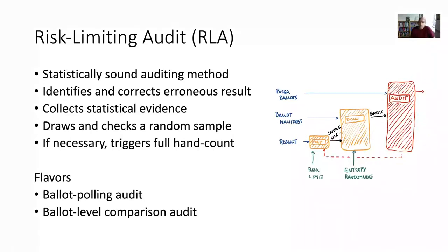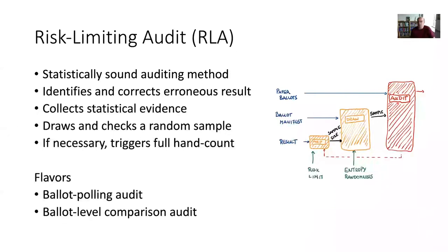Risk-limiting audits come in many different flavors. There's the ballot polling audit, where you draw a sample and try to find statistical support for the correctness of the election result. In a ballot-level comparison audit, you check that each ballot is correctly registered on the cast vote record (CVR). In this talk I'm focusing mostly on ballot-level comparison audits, because that scales up to other countries beyond the United States, and I believe the findings are important not just for the US but also internationally.